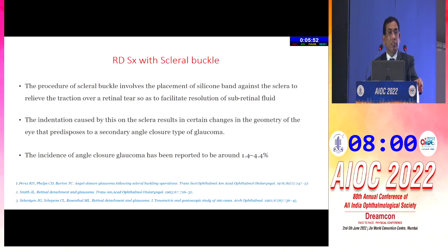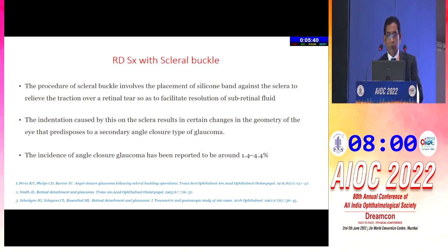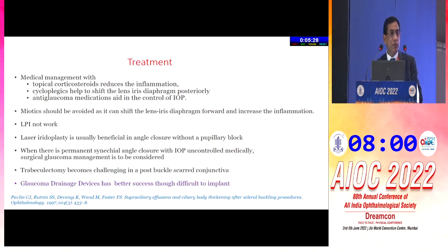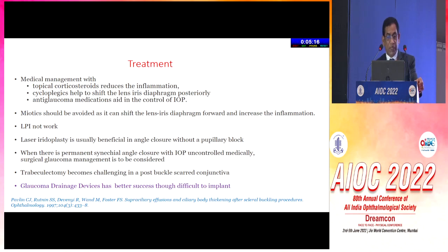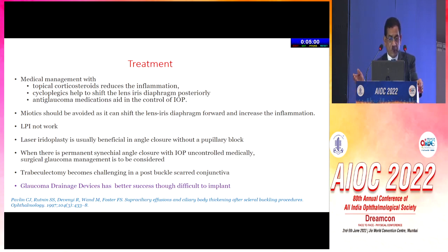The retina surgeon uses scleral buckle to relieve the traction of the retinal tear and facilitate resolution of subretinal fluid. But it also mechanically closes the angle of the anterior chamber, causing higher intraocular pressure. In this case, laser iridotomy will not help. Rather, we can do laser iridoplasty along with medical management, topical corticosteroids, cycloplegics. But ultimately, the majority of patients do not get IOP relief, so we have to go for surgical treatment. Many patients need trabeculectomy, but it has poor success — up to 53% five-year survival — so glaucoma drainage device is the answer, with better success rate up to 80%.